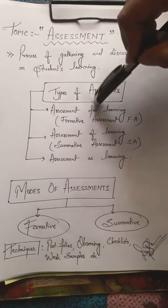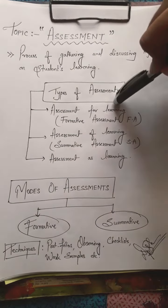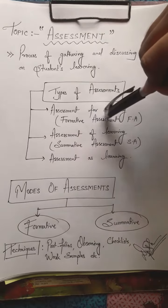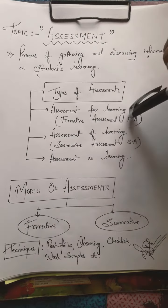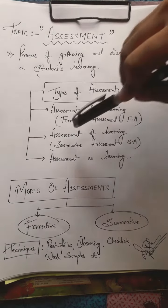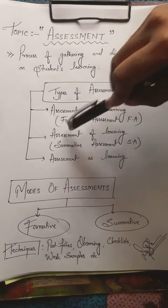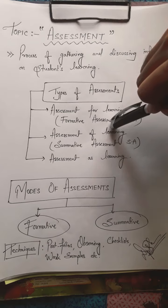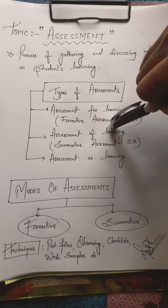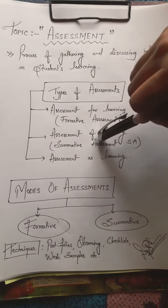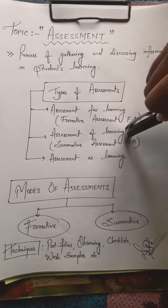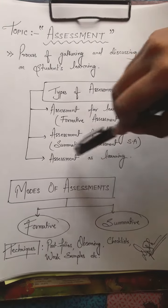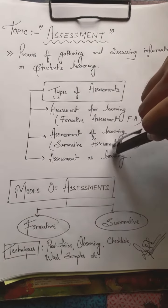First is assessment for learning. The another name is also known as formative assessment, that is FA. Second one is assessment of learning. The another name of assessment of learning is summative assessment, that is SA. And the third one is assessment as learning.